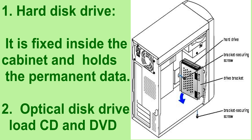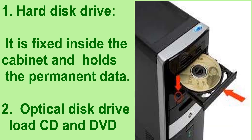The hard disk drive is fixed inside the cabinet and holds the permanent data. The optical disk drive is visible in the front of the cabinet, from where you can load the CD or the DVD.